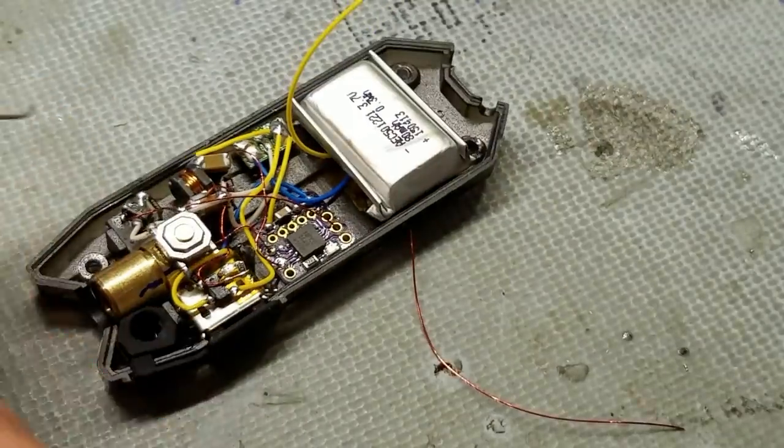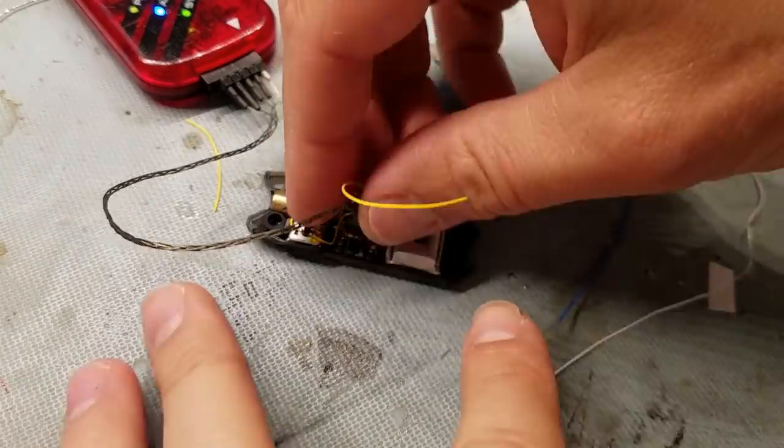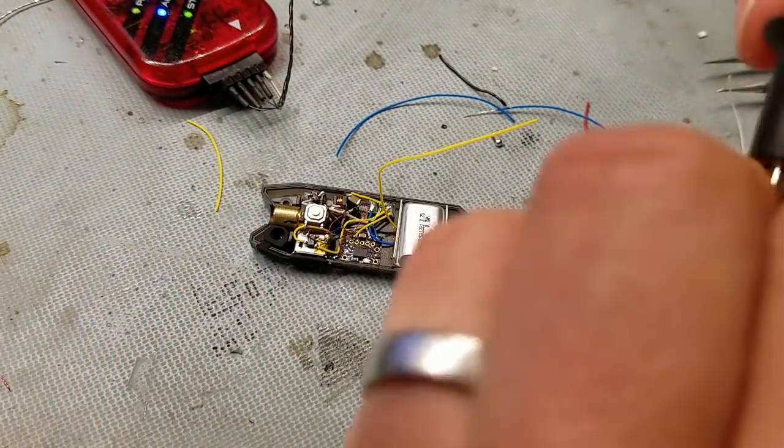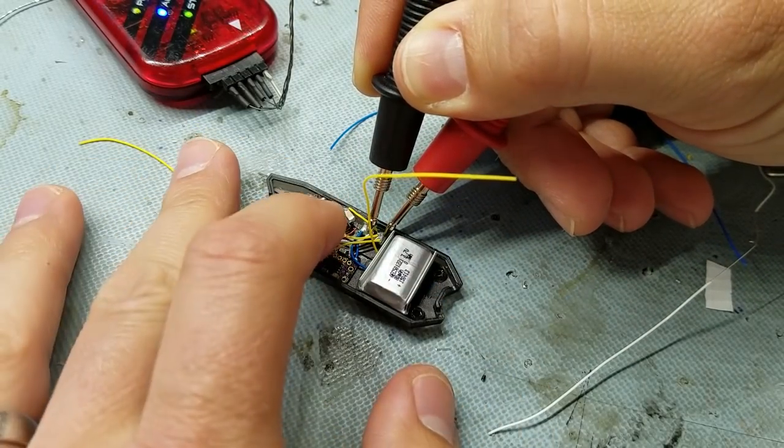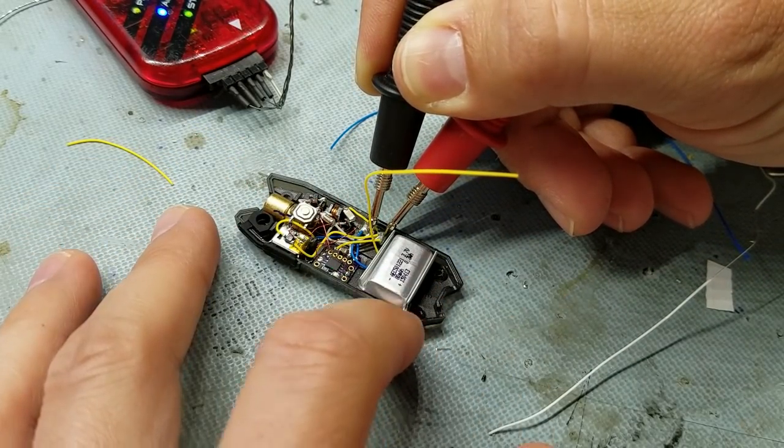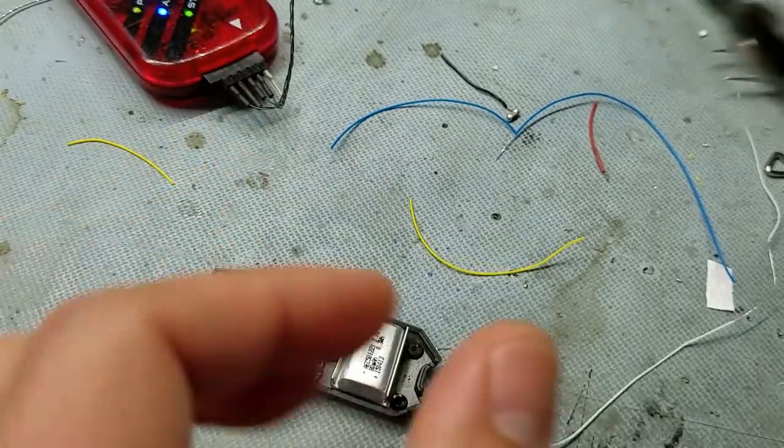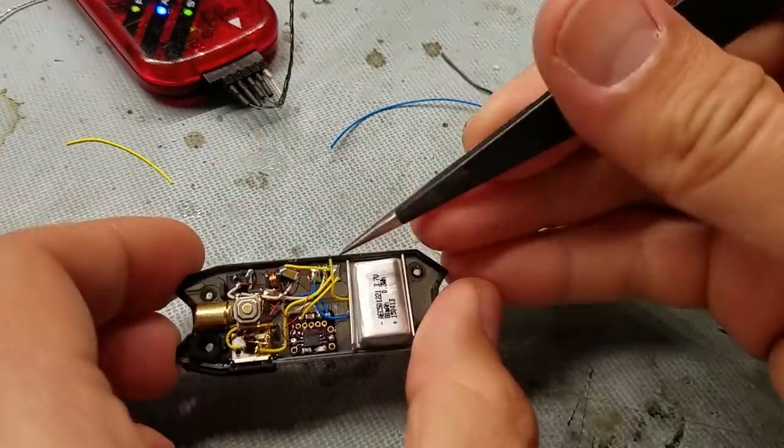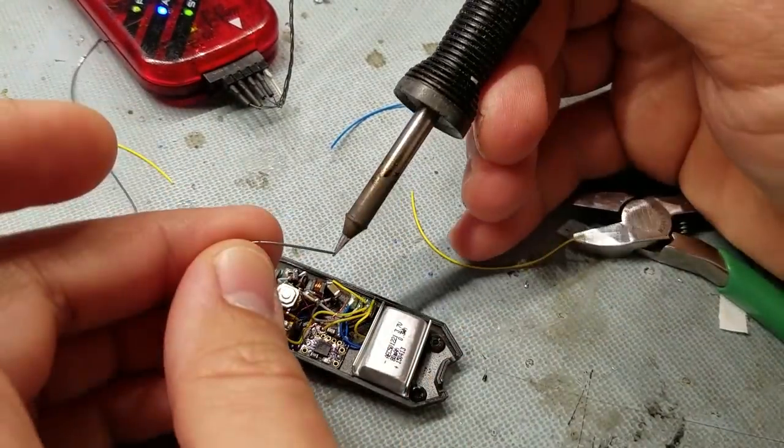After everything is wired, I program the chip and then do a final test before connecting the battery. Here you can see the indicator blinking out battery voltage. Now that everything is working, I'll connect the battery and we can do a final functional test.